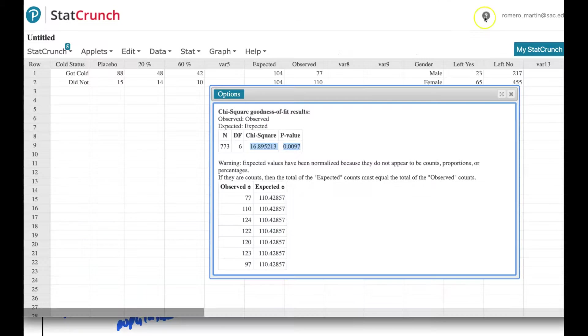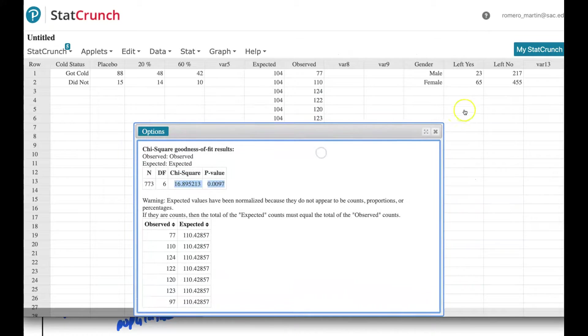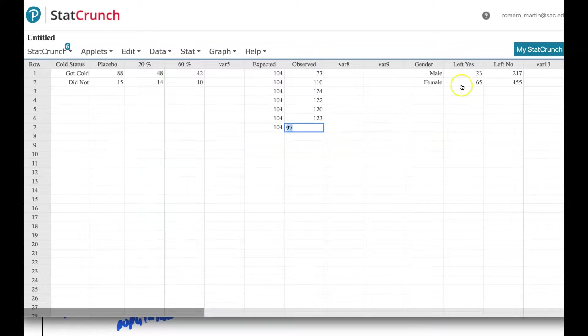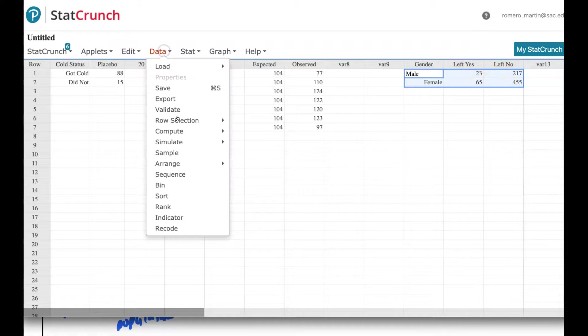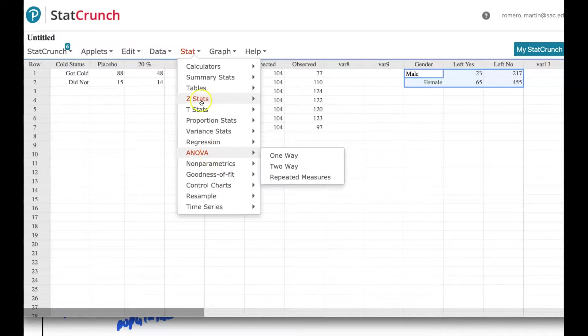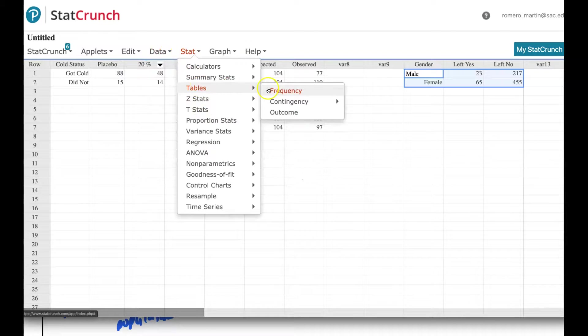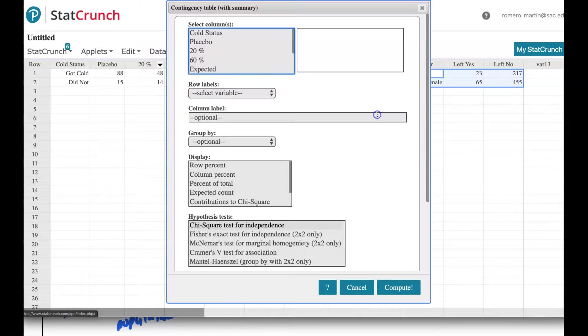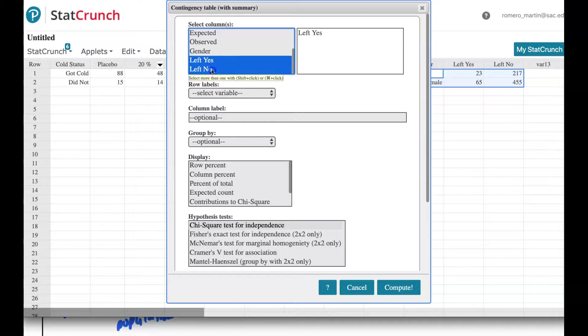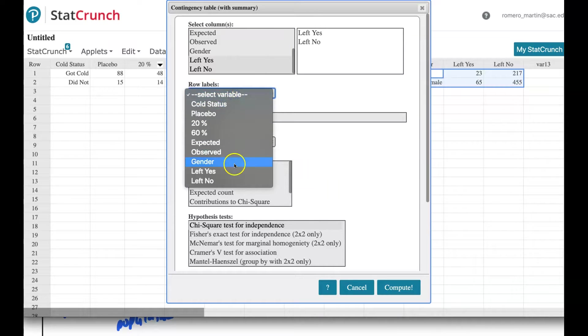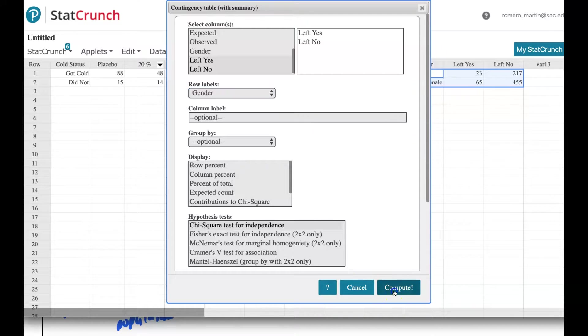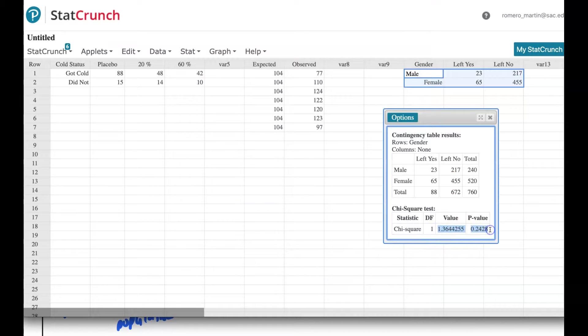And so one more time, just to finish this off, we will look here and we see, sorry, you enter the data into the table here. There's your gender. There's your column. And then we would do stat, table, contingency with summary. And so in this case, the columns are the left in yes and left no. Row labels is the gender. And then you just run it. And then there it is again. There's your p-value and test statistic that we got.